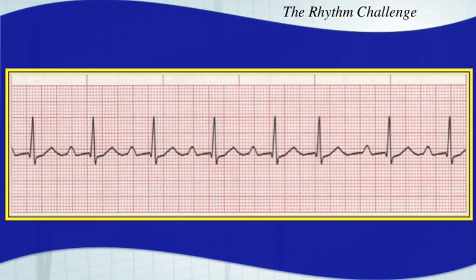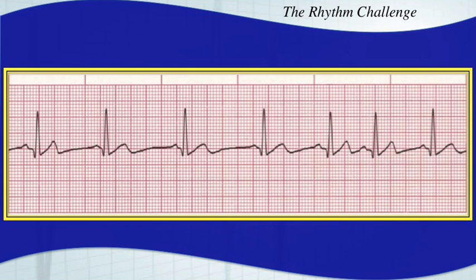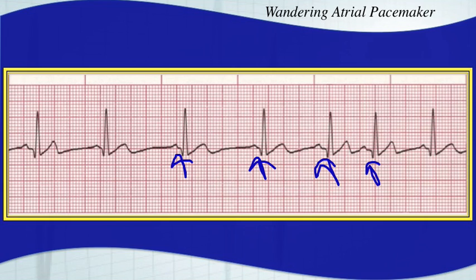This one is a sinus rhythm with a first degree AV block — just a little bit of a prolonged PR interval. And this next one is a wandering atrial pacemaker. Note the morphologies of the P waves. Since it's slower than 100 beats per minute with several different morphologies, it's called a WAP — wandering atrial pacemaker.